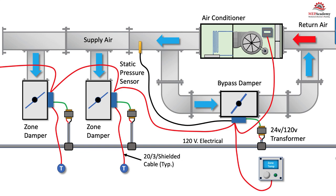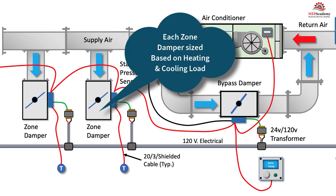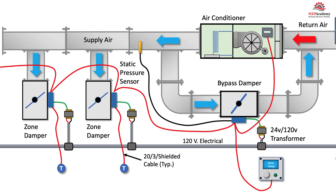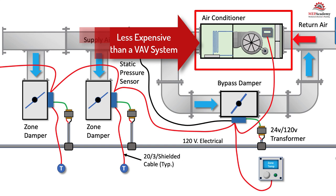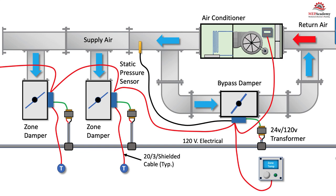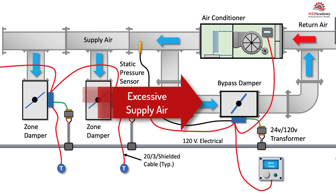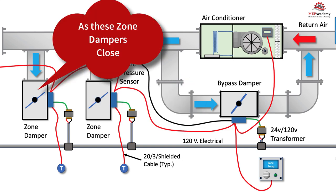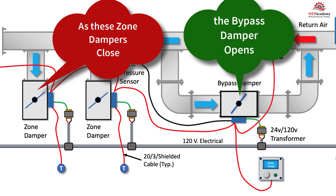A VVT system uses zone dampers so that each zone can adjust the volume of air it receives based on its heating or cooling load. Each zone has its own controller that adjusts the air volume based on demand. What makes the VVT system different from the more efficient VAV system is the use of a less expensive constant volume air conditioning unit and less sophisticated controls. The VVT system uses a bypass controller to modulate the bypass damper to allow any unused supply air to return to the system when zone dampers start to close.